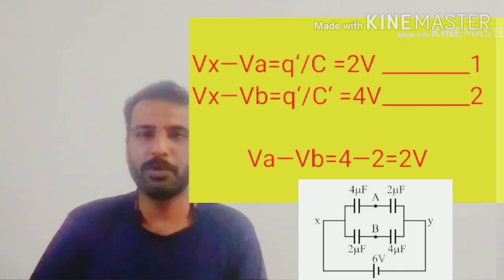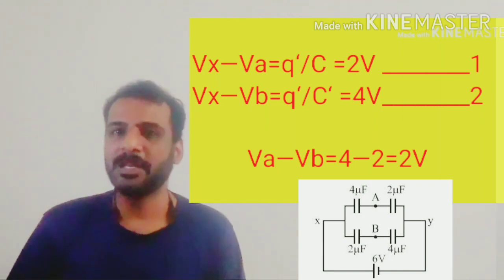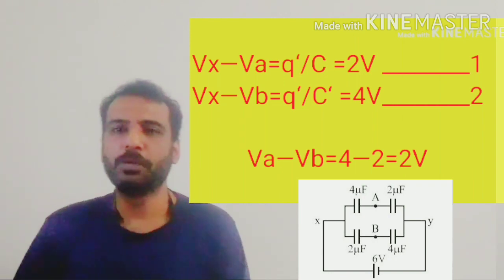And the other one VX minus VB is equal to Q by C again. Q is equal to 8 and C is equal to 2 we get 4.